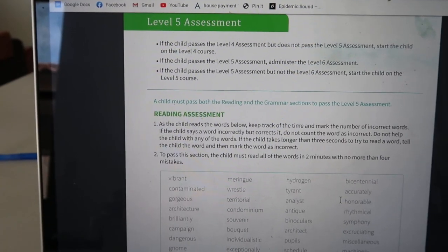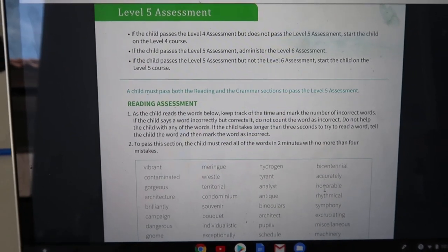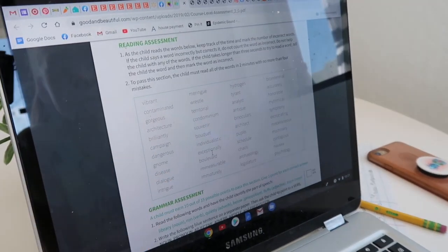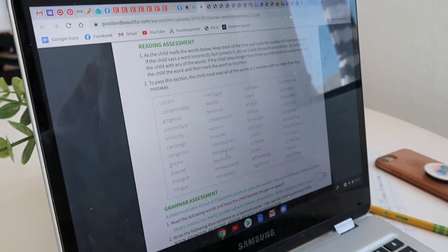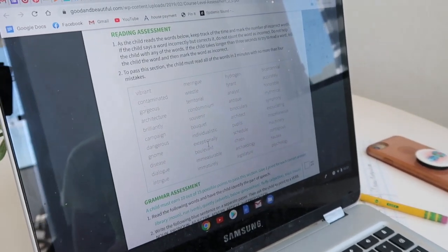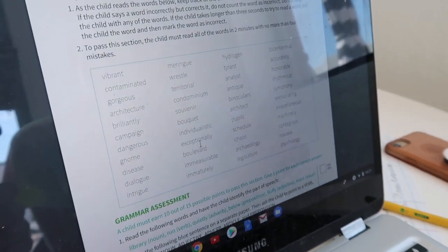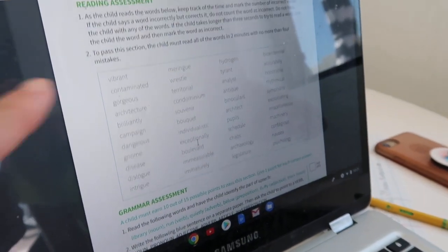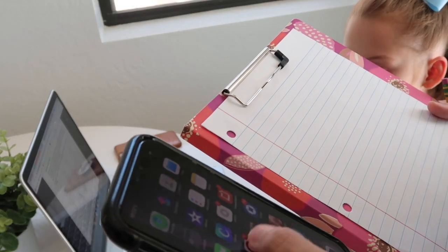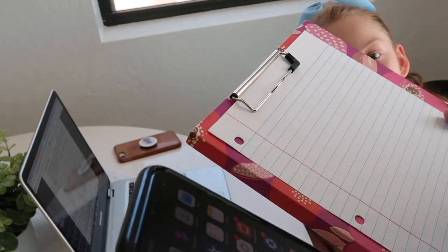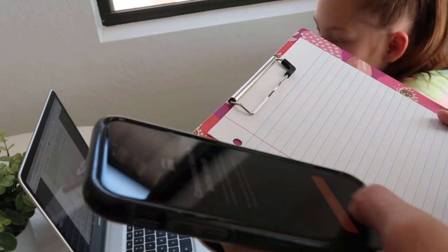Here is the level five assessment. I'm going to have her do this one first. These are the words that you're going to tell me. Just read through them and I'm going to time you. You want to do it in about two minutes and not get more than four wrong. Read all of them. You're just going to go through and read them. Just say it as you think you'd say it because you're being timed.